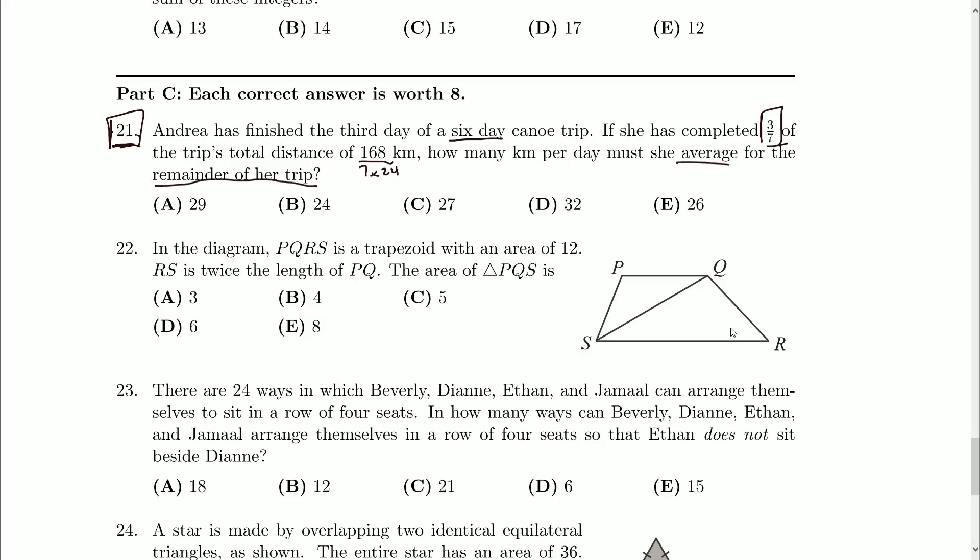Okay, so keyword there: average. We want kilometers per day. To figure out the average, we need the distance for the rest of the trip divided by number of days in the rest of the trip. So we have some things to think about. How much more distance does she have to go? And how many more days are left of her trip?